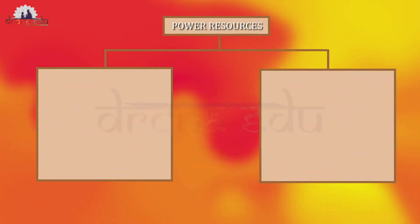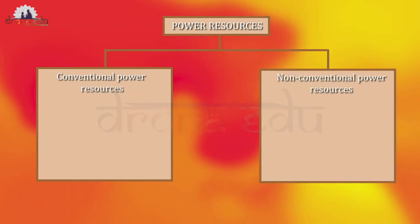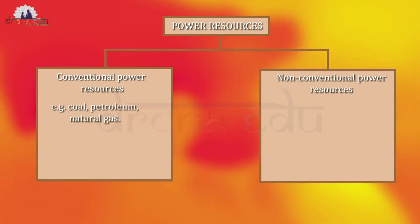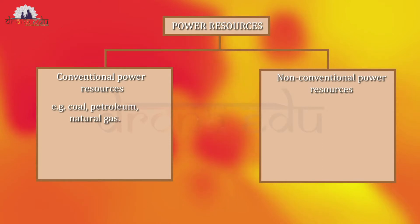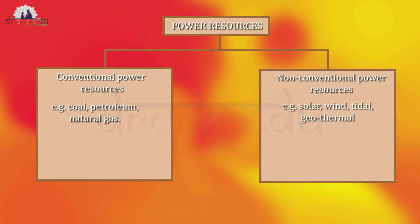On the basis of their nature, power resources can be divided as conventional and non-conventional power resources. Conventional power resources include coal, petroleum, natural gas, etc. Most of these are exhaustible. Non-conventional power resources include alternative sources of energy such as solar, wind, tidal, geothermal power, biogas, etc.